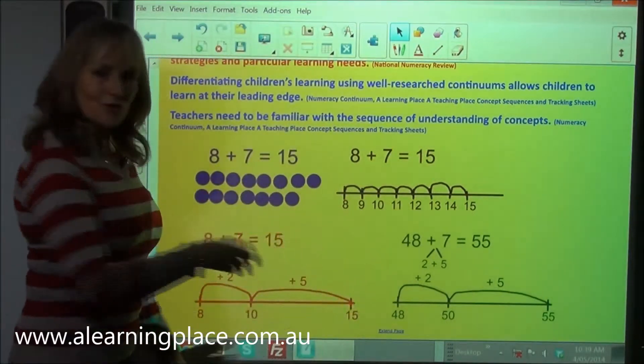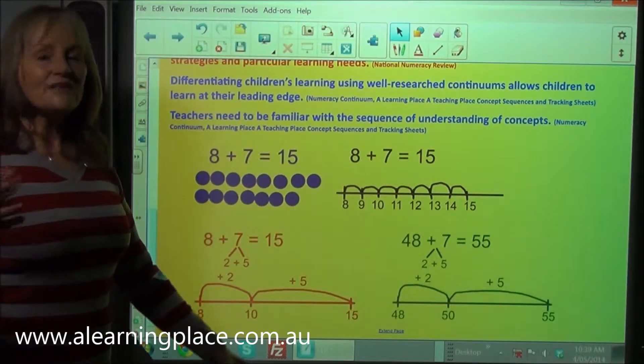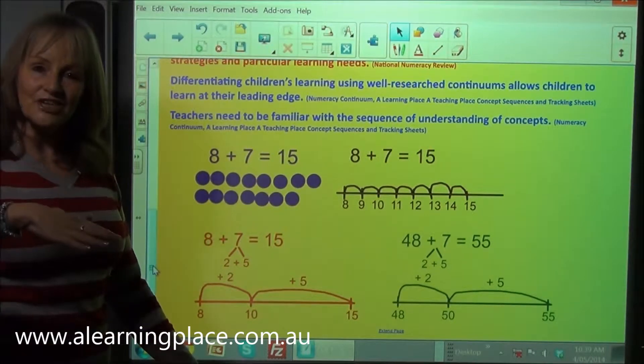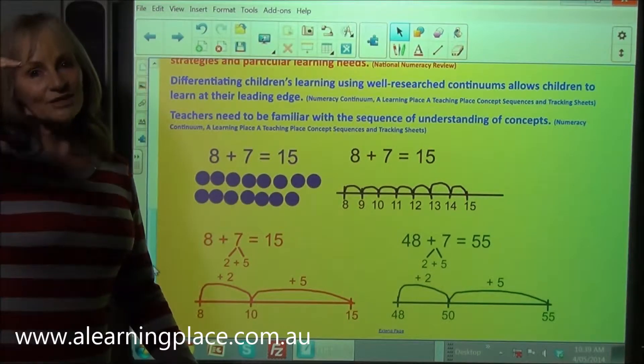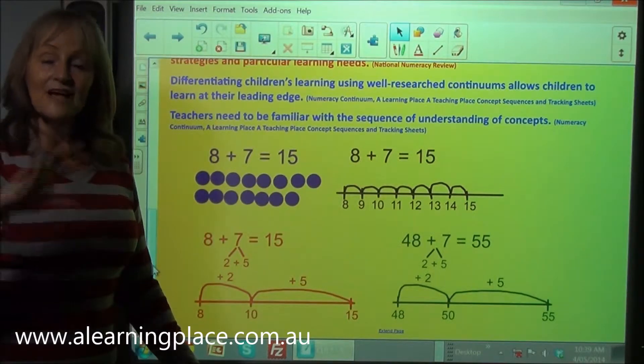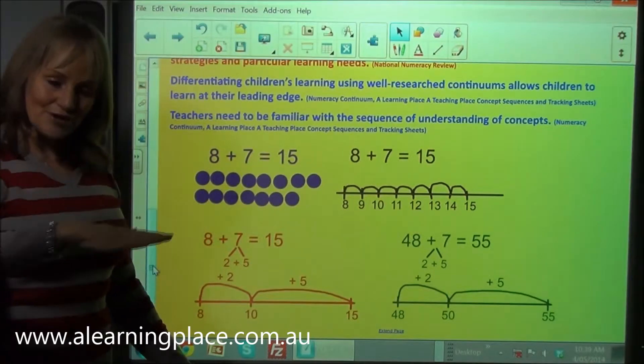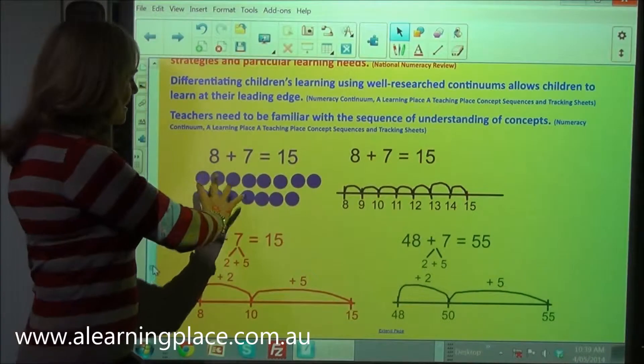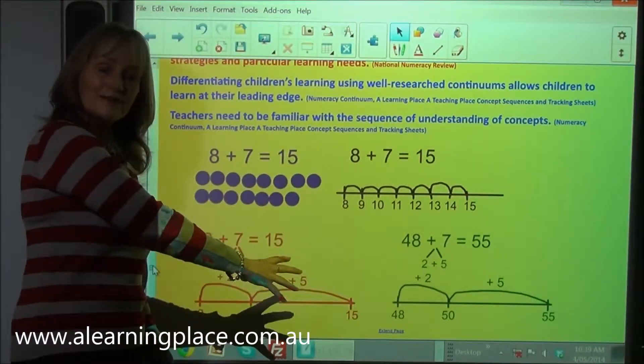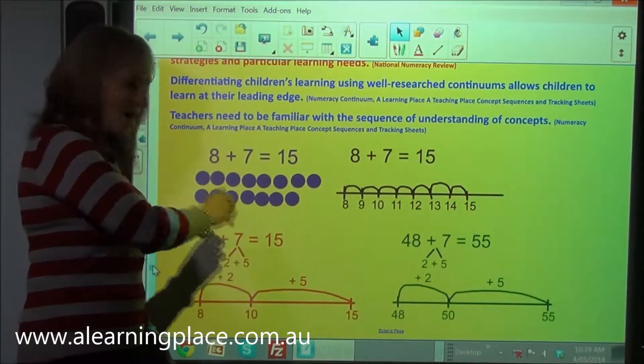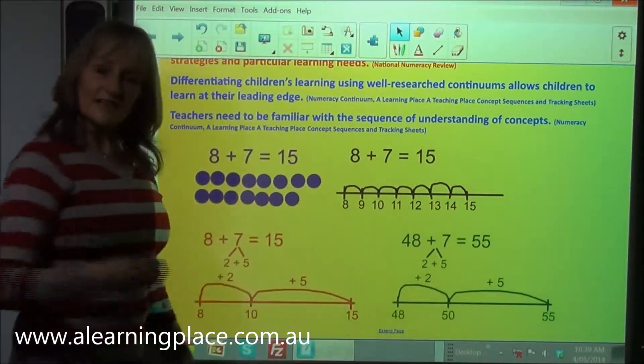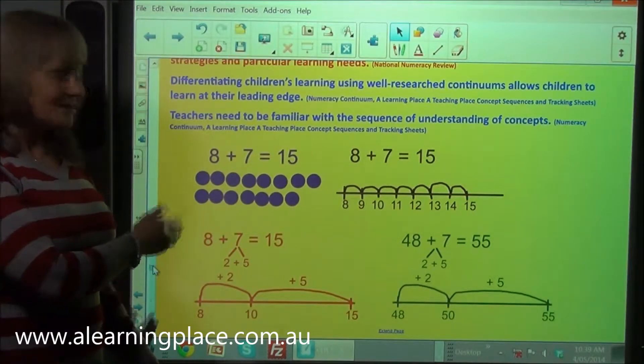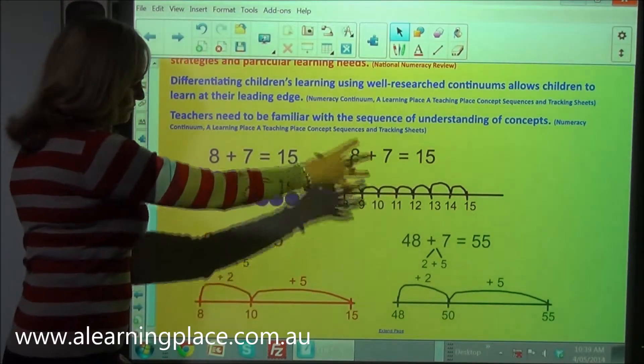So I've just chosen these four levels at random and I'm thinking I might have say a year one or a year two class but it's just as easy to differentiate using my concept sequences for any grade as long as you can work out what level the children are working at. So I would not have this on the board before the lesson, I would build this during the explicit teaching part of the lesson.